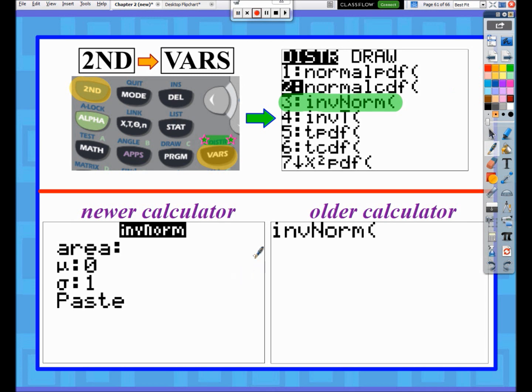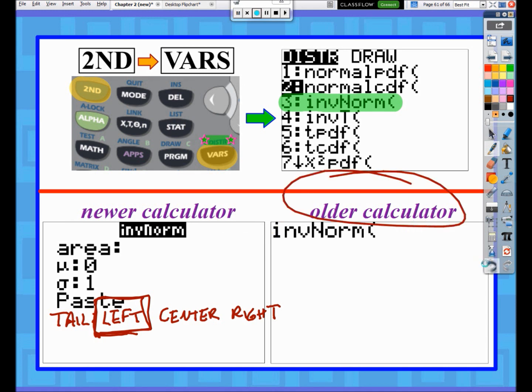What I also found out very recently is that some of the newer calculators will also have something called tail, and there's three options for tail: left, center, and right. If you have those options, by default we're always going to select left tail.